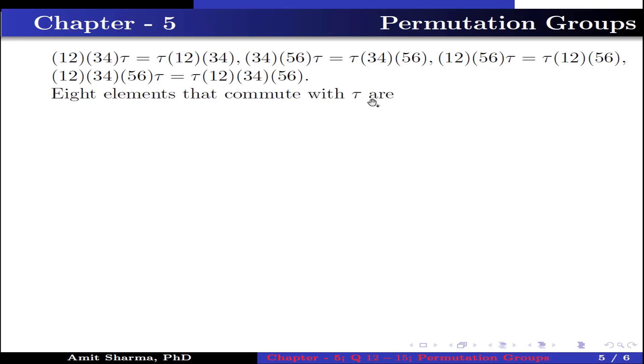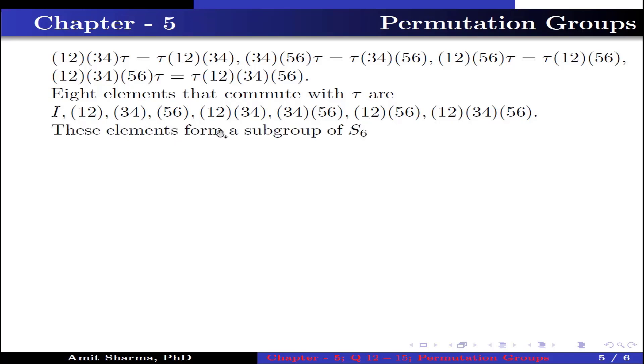8 elements that commute with τ are: identity, (1,2), (3,4), (5,6), (1,2)(3,4), (3,4)(5,6), (1,2)(5,6), and (1,2,3,4,5,6). These elements form a subgroup of S₆. Why? Because the set made by these elements is closed under the function composition.